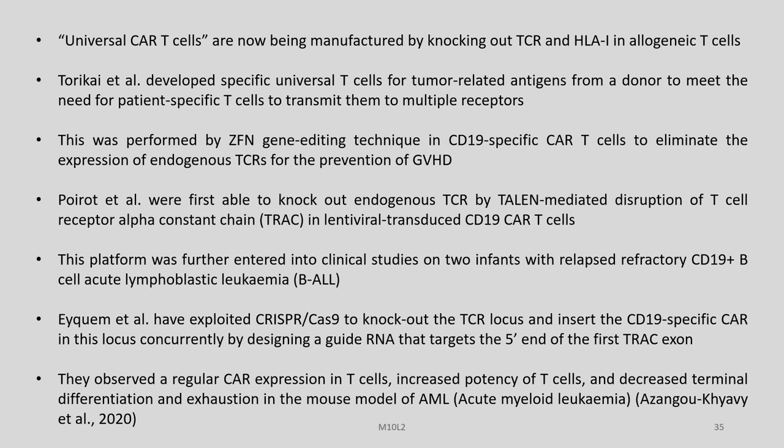Poirot et al. were the first to knock out the endogenous TCR by TALEN-mediated disruption of the T-cell receptor alpha constant chain in lentivirally transduced CD19 CAR T-cells. This platform was further entered into clinical studies on two infants with relapsed refractory CD19 B-cell acute lymphoblastic leukemia.